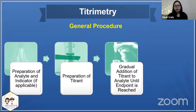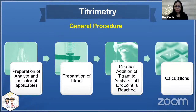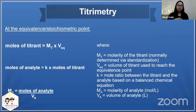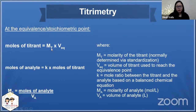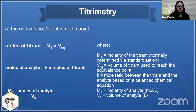Then gradually add your titrant to your analyte until the endpoint is reached, and perform your calculations. At the equivalence point, the moles of titrant are calculated as the molarity of the titrant — normally obtained by standardization — multiplied by the volume of titrant needed to reach the equivalence point. You then relate that to the moles of analyte using the stoichiometric ratio. The end goal is to calculate the molarity of the analyte, which is the moles of analyte divided by the volume of analyte in liters.